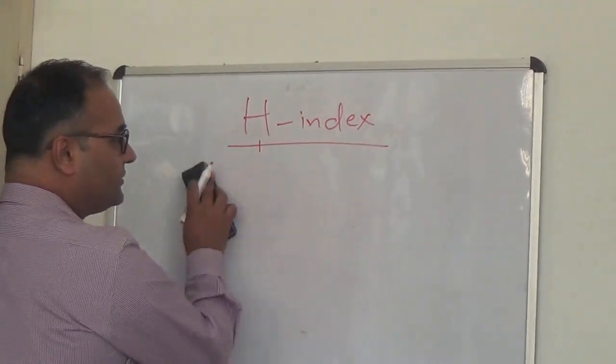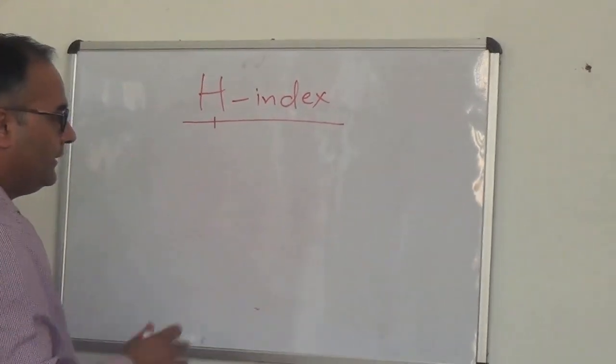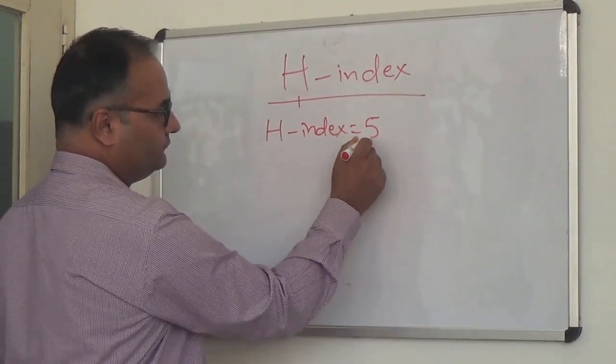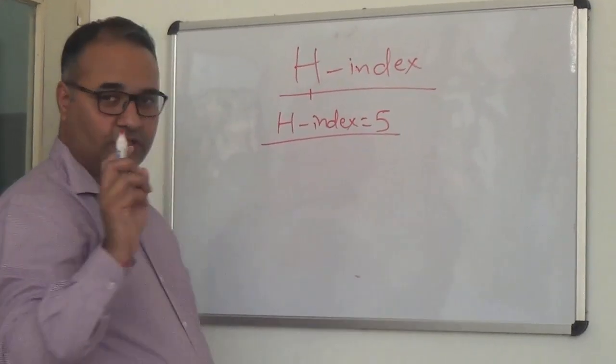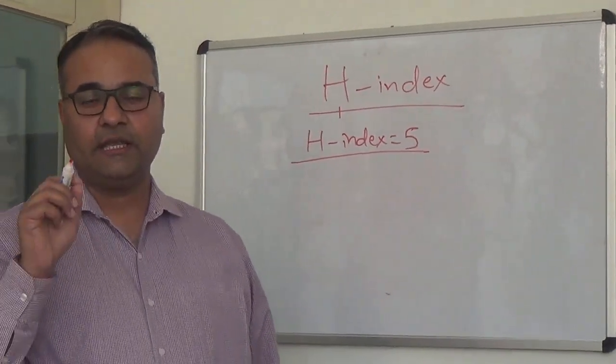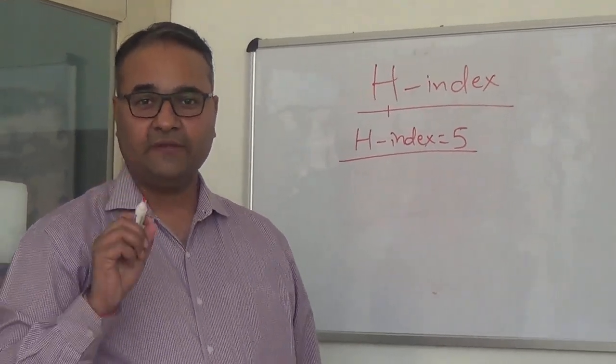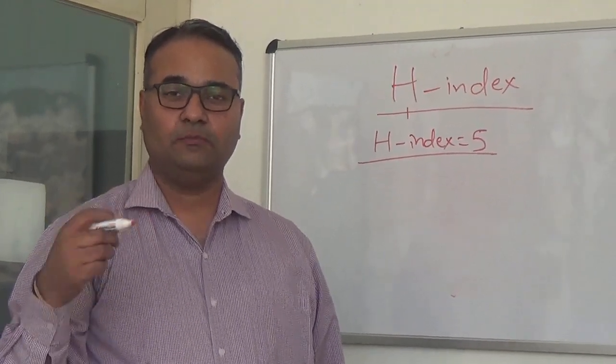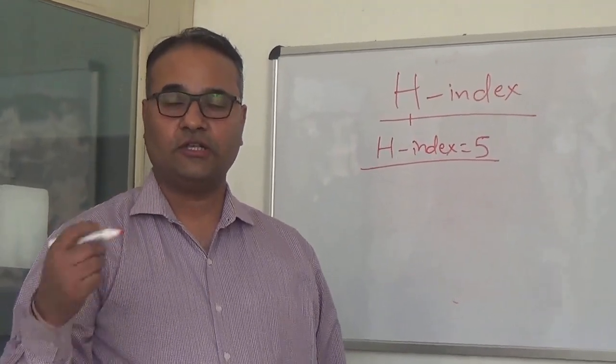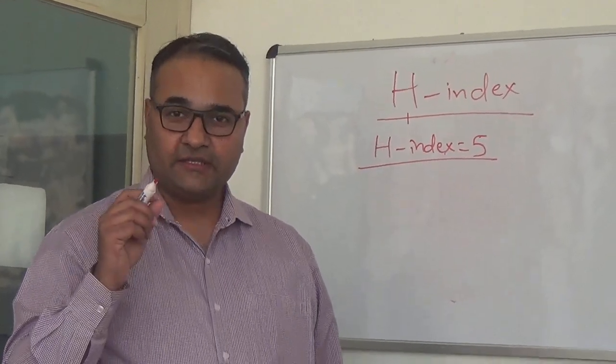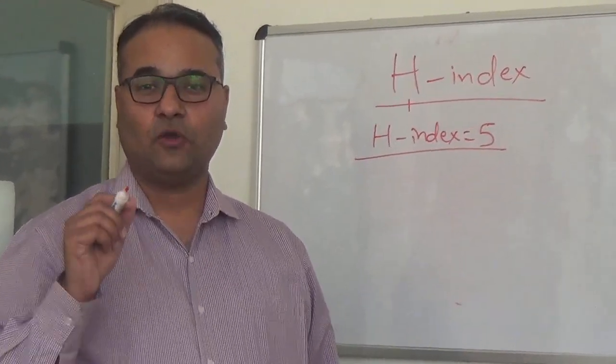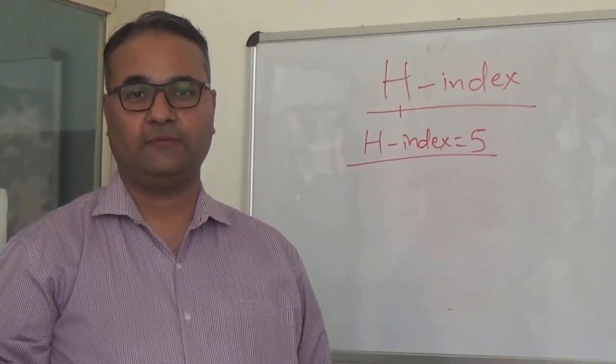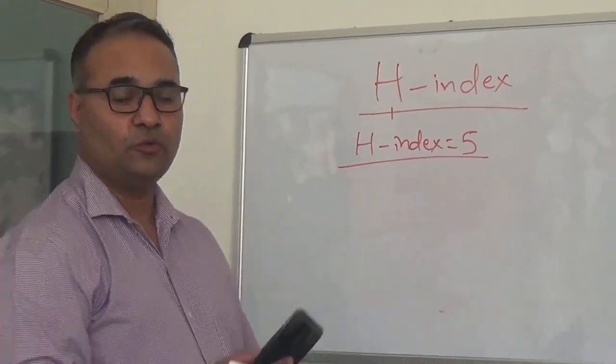Let me try to make you understand through an example. Let us assume the H-index is 5. Now, this is where I really need your attention. If H-index is 5, it means 5 research papers of that entity—where the entity can be an institute, individual author, country, or journal—have been cited minimum 5 or more number of times. This is how the meaning of H-index is.